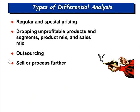We're going to focus on four basic types of decisions to give you a flavor of the different types of analysis we can run: should we accept a special order, drop an unprofitable product or segment or department, outsource by making or buying the product, or sell a product versus process it further?